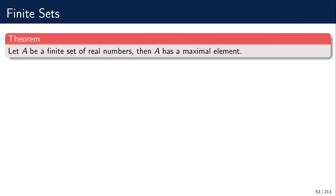Let us start by proving this nice theorem: every finite set of real numbers has a maximal element. It also follows that every finite set of real numbers has a minimal element. This is true for finite sets and untrue for infinite sets. For example, the set of all real numbers has no maximal element, as there is no biggest real number. Even for the set of natural numbers, there is no maximal element — this set is infinite.